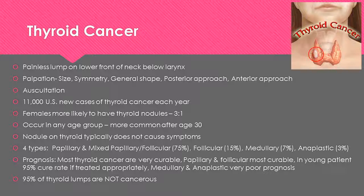A nodule on the thyroid typically does not cause symptoms. There are four types: papillary and mixed papillary follicular, which accounts for about 75%; follicular at 15%; medullary at 7%; and anaplastic at about 3%. Most thyroid cancers are very curable. Papillary and follicular are the most curable in young patients, approximately 95% cure rate if treated appropriately. Medullary and anaplastic carry a very poor prognosis for cure. About 95% of thyroid lumps are not cancerous.